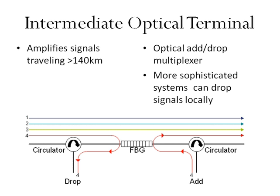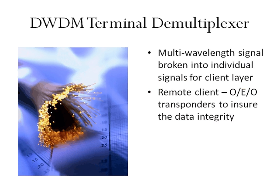At the end of this process, DWDM terminal demultiplexers break the multi-wavelength signal into individual signals on separate fibers for the client layer to pick up. However, if the signal needs to be sent to a remote client, the demultiplexed signals are sent to OEO transponders — optical to electrical to optical — before being relayed to ensure the integrity of the data.